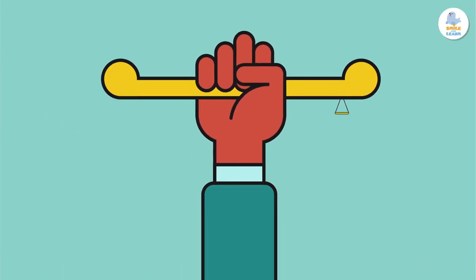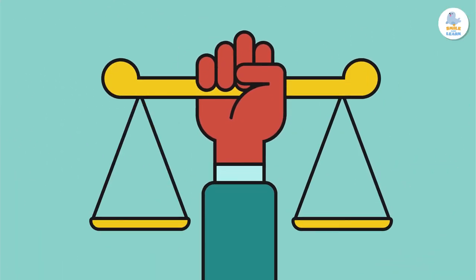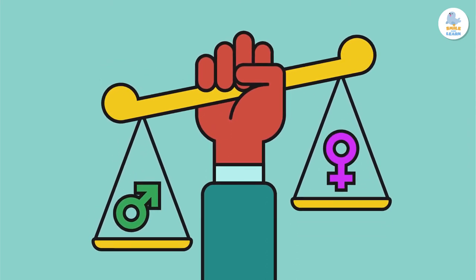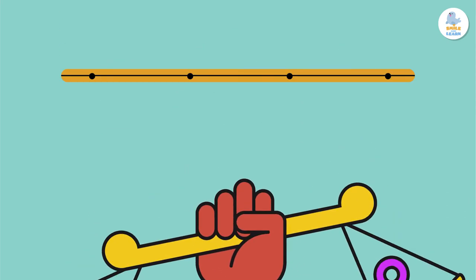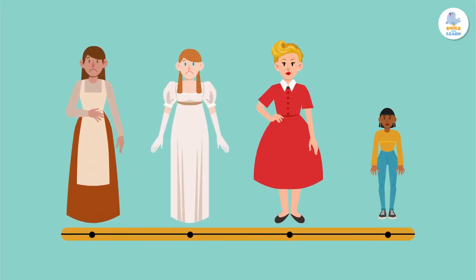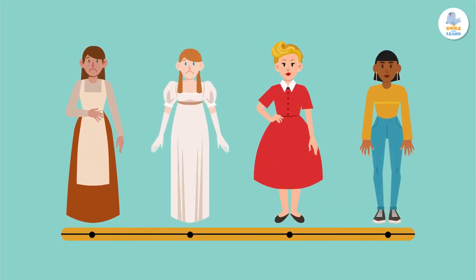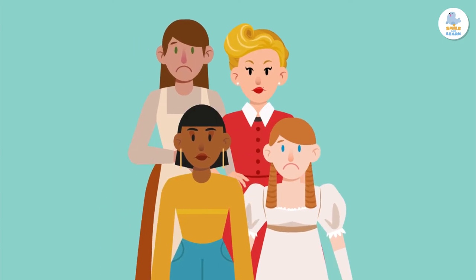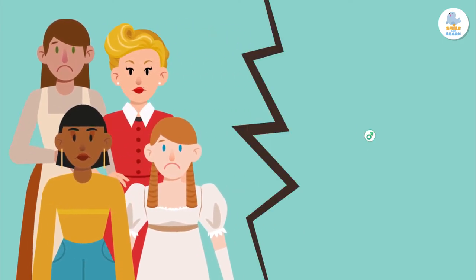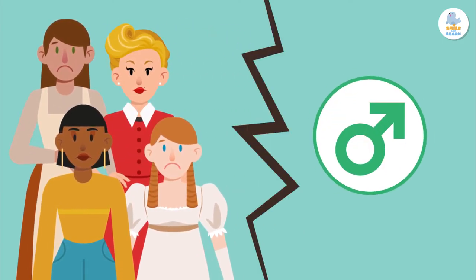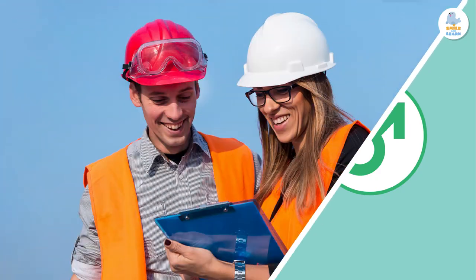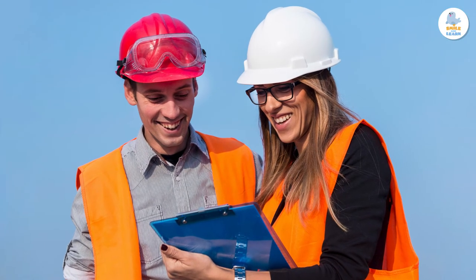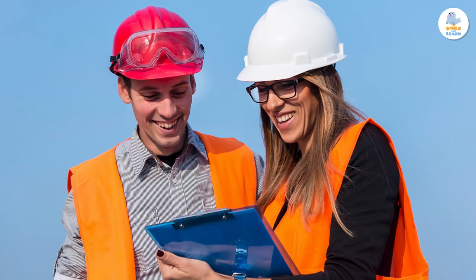Gender inequality occurs when a person does not have access to the same opportunities as another person because of their gender. Historically, this has happened a lot to women, who have seen how their working and social opportunities have been worse than men's. This situation has improved in some countries, but there's still a long way to go to reach true equality.